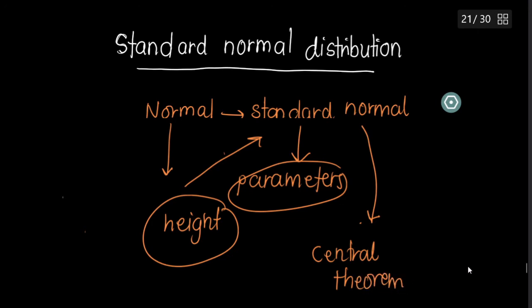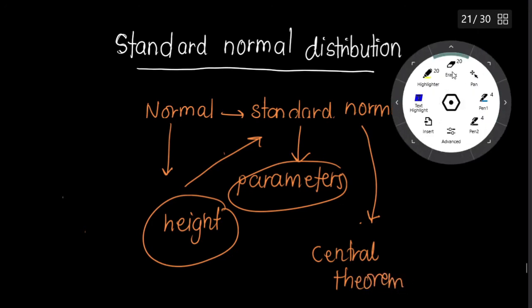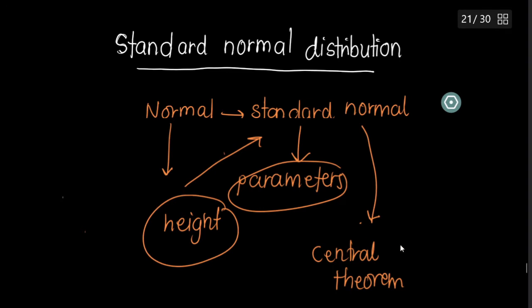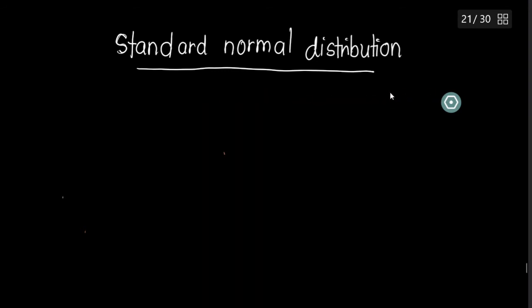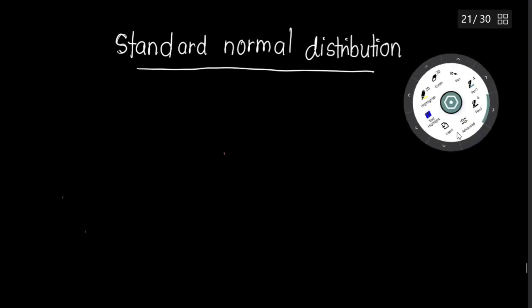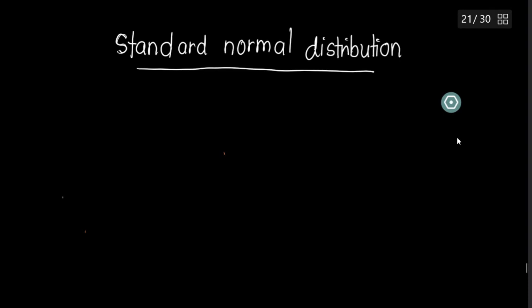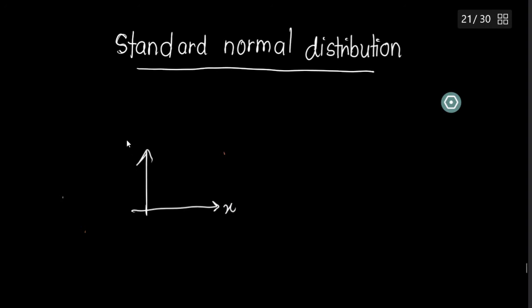These are quite advanced terms but good to know, especially if you study maths, engineering, or similar fields in the future. For now, what you need to know is: if you have a normal distribution graph, the mean will usually be some value — maybe 3 or any number. That's your normal graph.